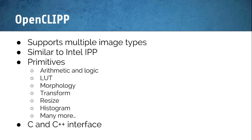OpenCL IPP is a library package used for image processing, similar to Intel's IPP. It supports many different image types — BITMAP, JPEG, and such — and has a large number of primitives including arithmetic and logical operations, lookup tables, morphologies, transforms, image resizing, histograms, and much more. It has two different types of interfaces: a C interface and a C++ interface.